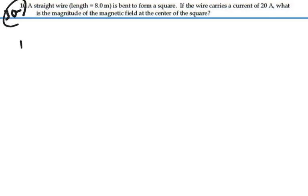Let's imagine what the square might look like. Let's make it big. If it has a total circumference of 8 meters, that means it's 2 meters on the side.